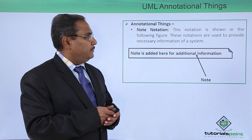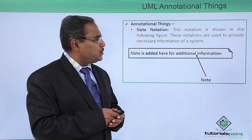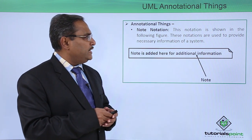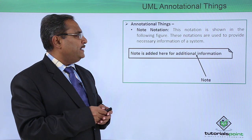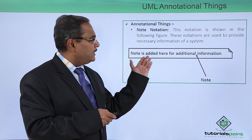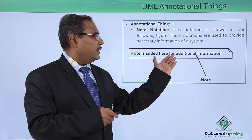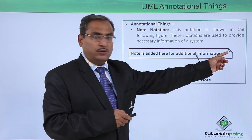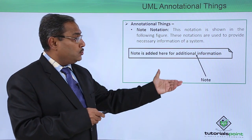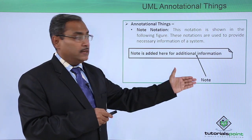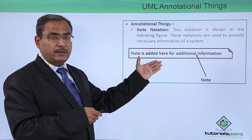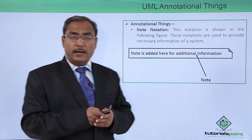Note notation is shown in the following figure, and these notations are used to provide necessary information about a system. The note is added here for additional information, and the corner fold is used to indicate that it is a note — the only annotational thing available in UML.